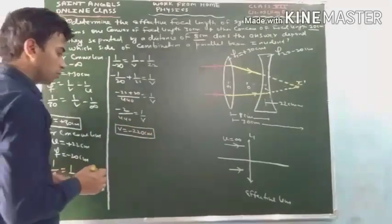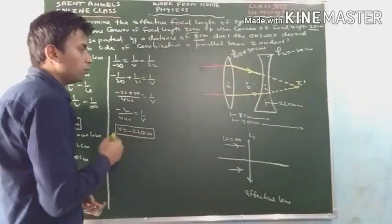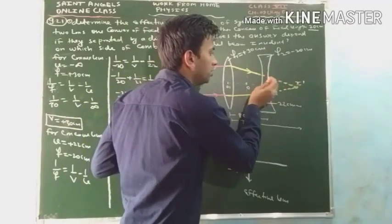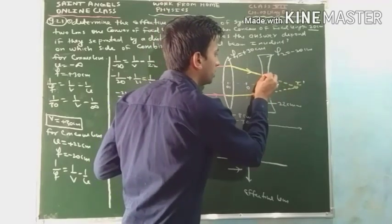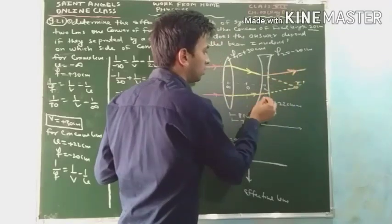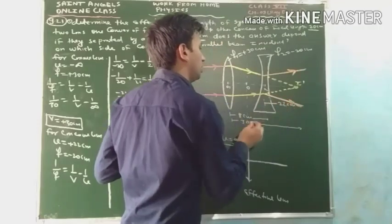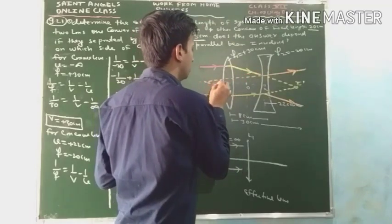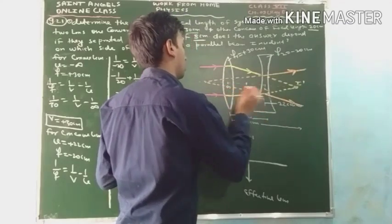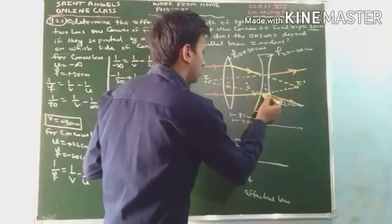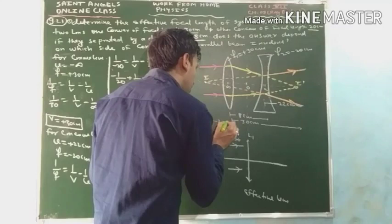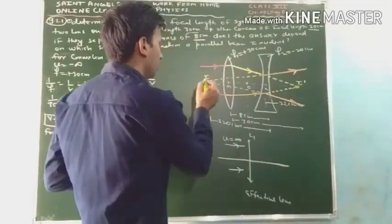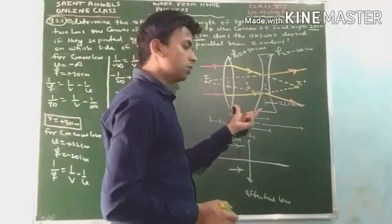The image formed by the concave lens is at a distance of 220 cm, opposite to the direction of the rays. This means the combination acts as a diverging system, diverging the rays. If we produce the rays backward, the final image I is formed at a distance of 220 cm from the concave lens.